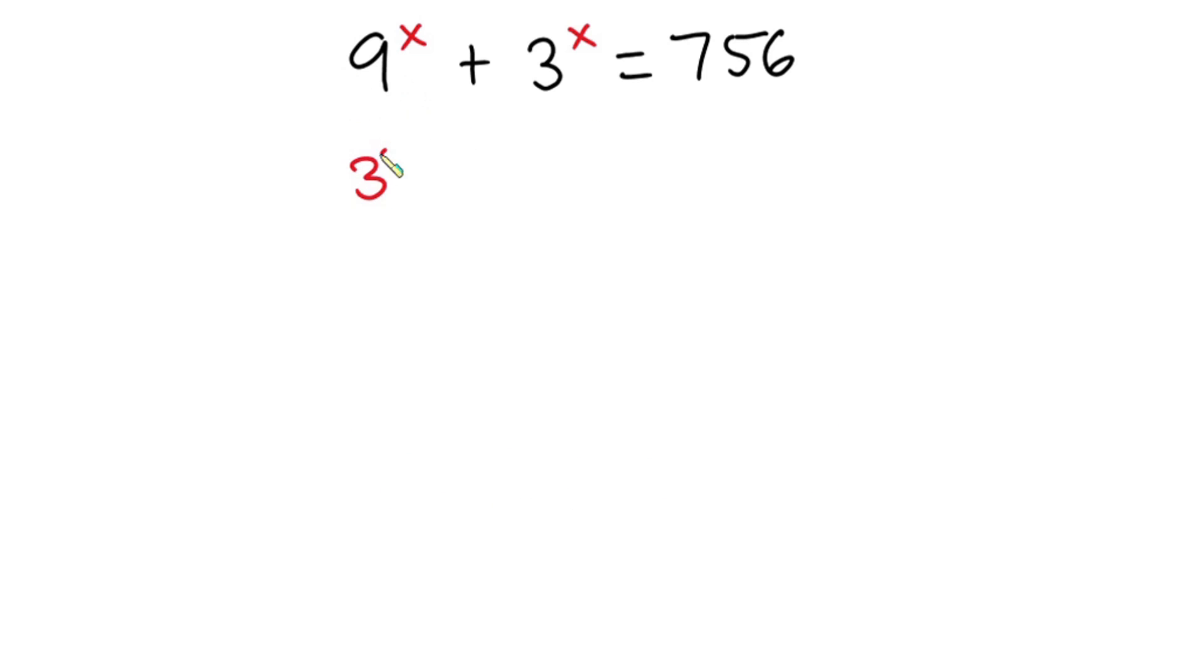Now let's get started. First I'm going to write this 9 as 3 to the second power, then to the power x. So we have x here, then plus 3 to the power x, and this is equal to 756.